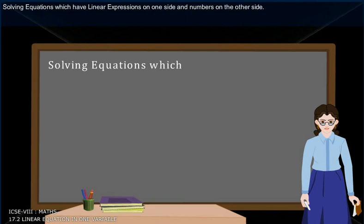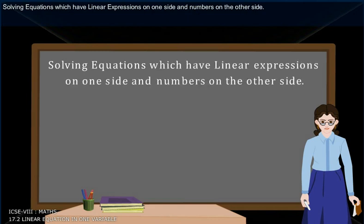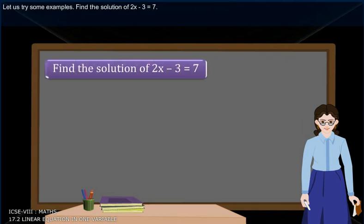Solving equations which have linear expressions on one side and numbers on the other side. Let us try some examples. Find the solution of 2x - 3 = 7.